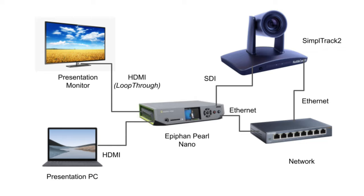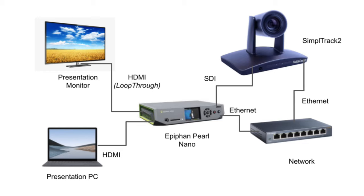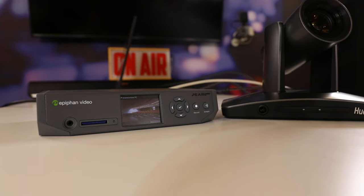This allows the Pearl Nano to capture the HDMI for recording and streaming while also allowing us to display the video on a local monitor. From here, we can configure the Pearl using the IP address found on the Nano display. We can type this IP address into a web browser to start laying out our recordings.